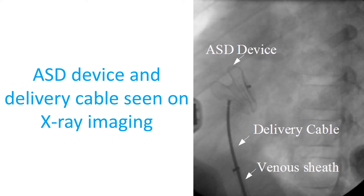Once the device has crossed the ASD, its position is further confirmed by echocardiogram — ultrasound imaging of the heart. After confirmation of position, first the left-sided disk is opened from the catheter used for introduction. Later, the right-sided disk is also opened.